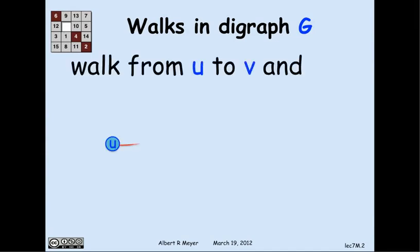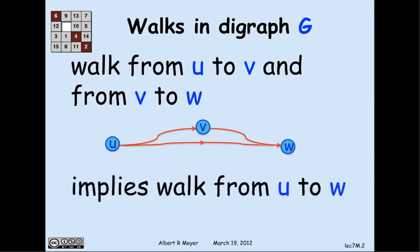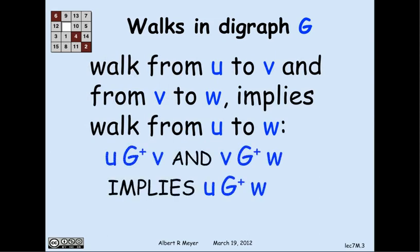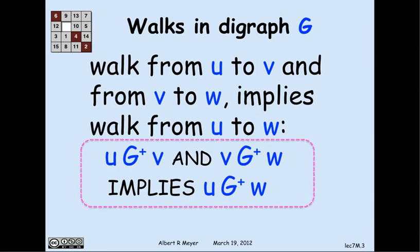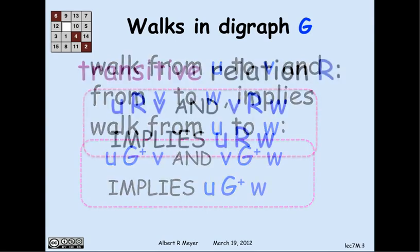If we think about walks in a digraph, the basic property of walks is that if you have a walk from u to v and a walk from v to w, then you put the two walks together and wind up with a walk from u to w. Expressed in terms of the positive walk relation in g, this says that if u g+ v and v g+ w, then u g+ w. That abstract property, highlighted in the magenta box, is called the transitivity property.